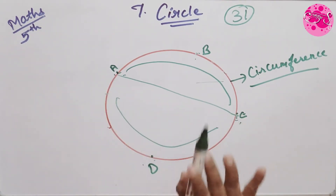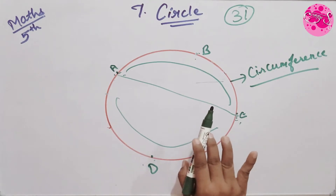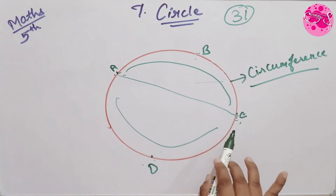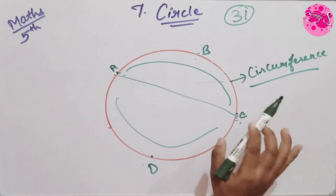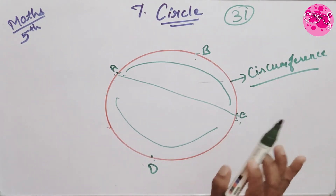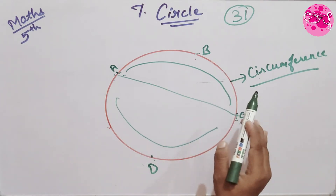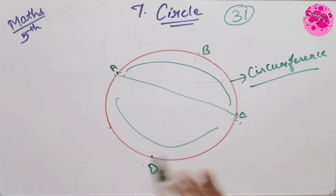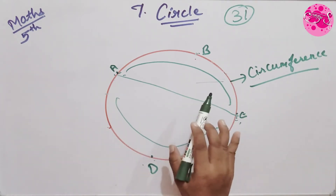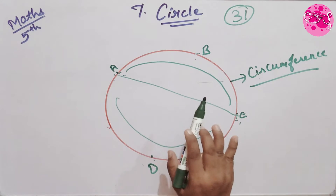From the name arc AC we cannot say which of the two arcs we are speaking of. So an additional point is taken on each arc. In this figure these two points are B and D, giving us arc ABC and arc ADC. Now let's solve problem set 31 to make this more clear.